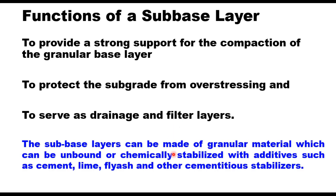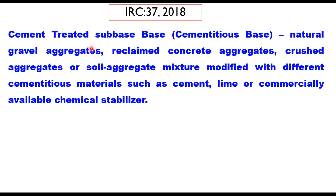The subbase layers can be made of granular materials which can be unbound or chemically stabilized with additives such as cement, lime, fly ash, and other cementitious stabilizers. These chemical stabilizers are available commercially in a variety of names and are collectively called Commercial Chemical Stabilizer or CCS. When cement or lime is used, the layer is called a Cement Treated Subbase (CTSB) layer. The material for CTSB as suggested in IRC 37 may consist of soil, riverbed material, natural gravel, aggregates, reclaimed concrete aggregates, crust aggregates, or soil-aggregate mixture modified with cementitious materials such as cement, lime, or commercially available chemical stabilizers.